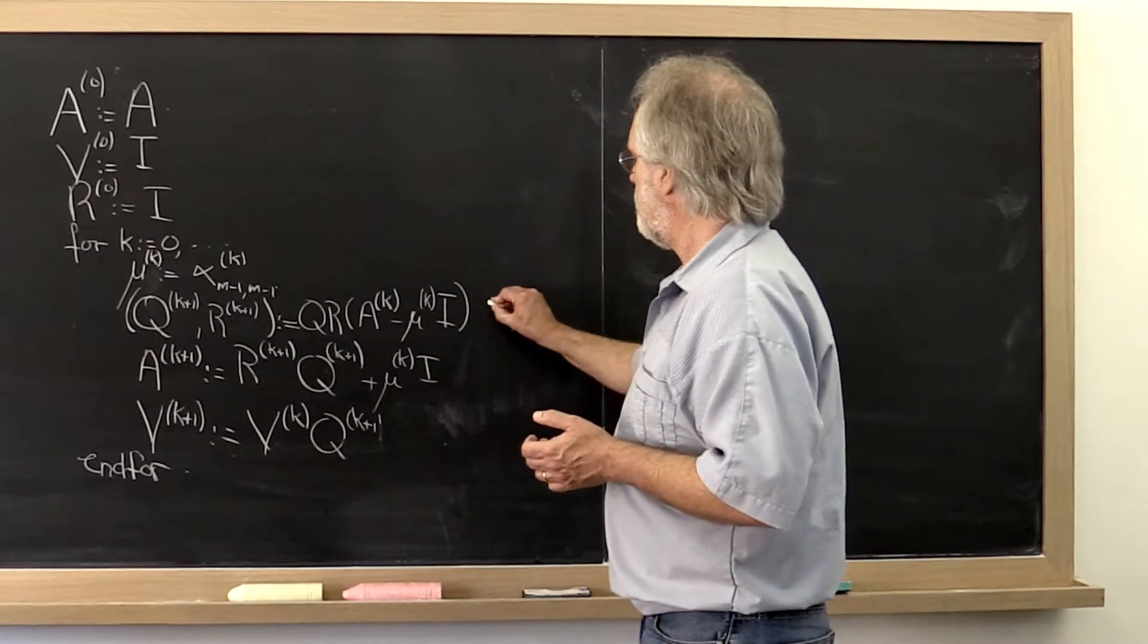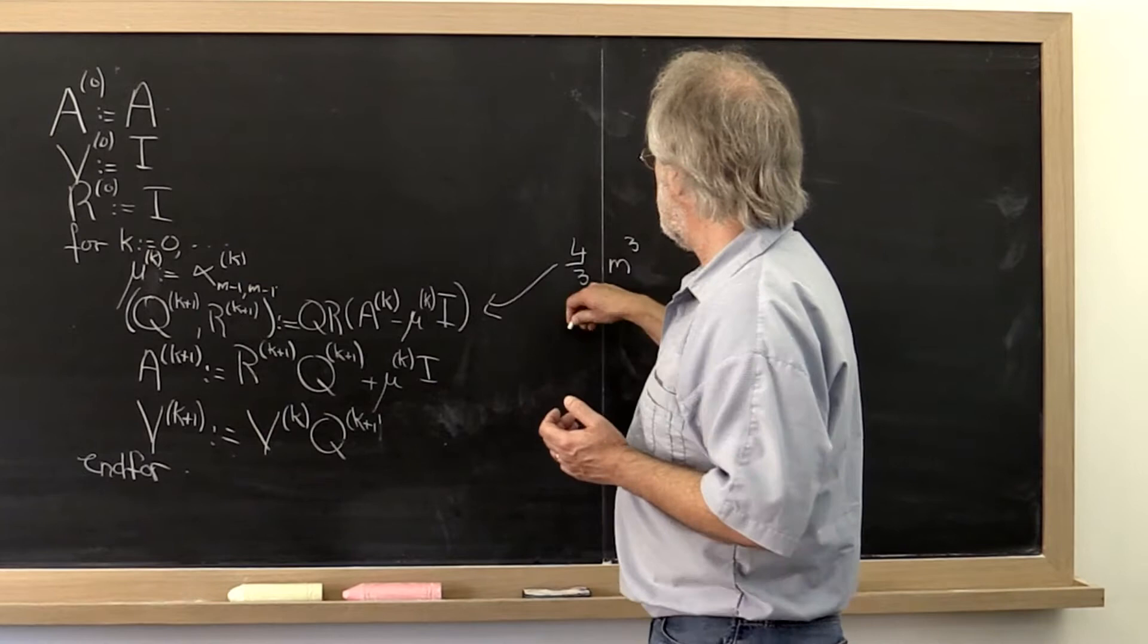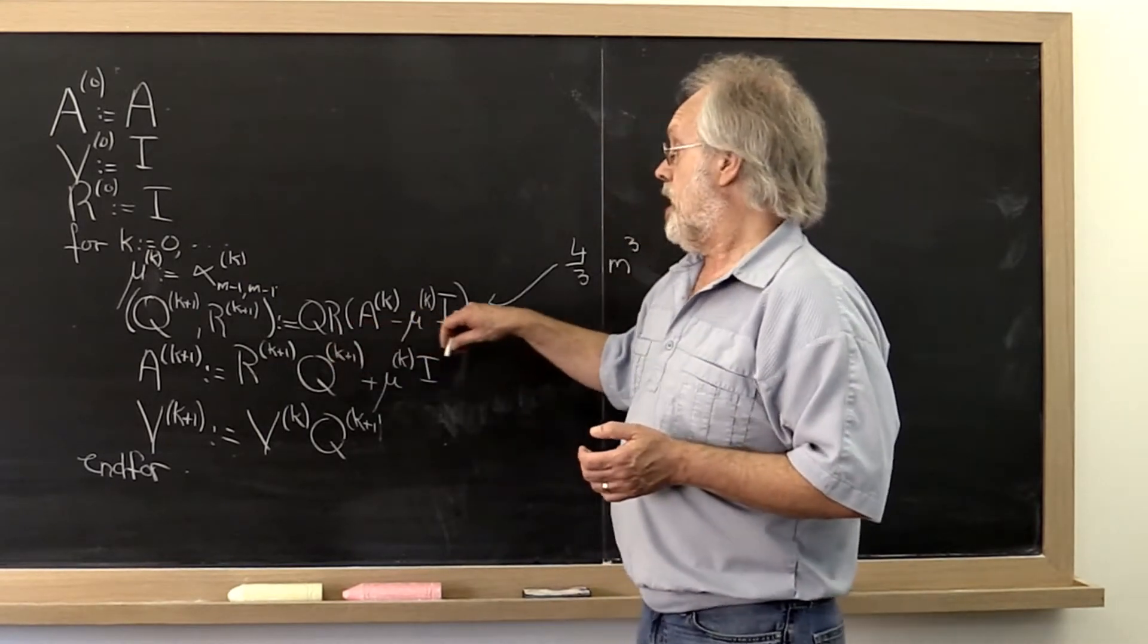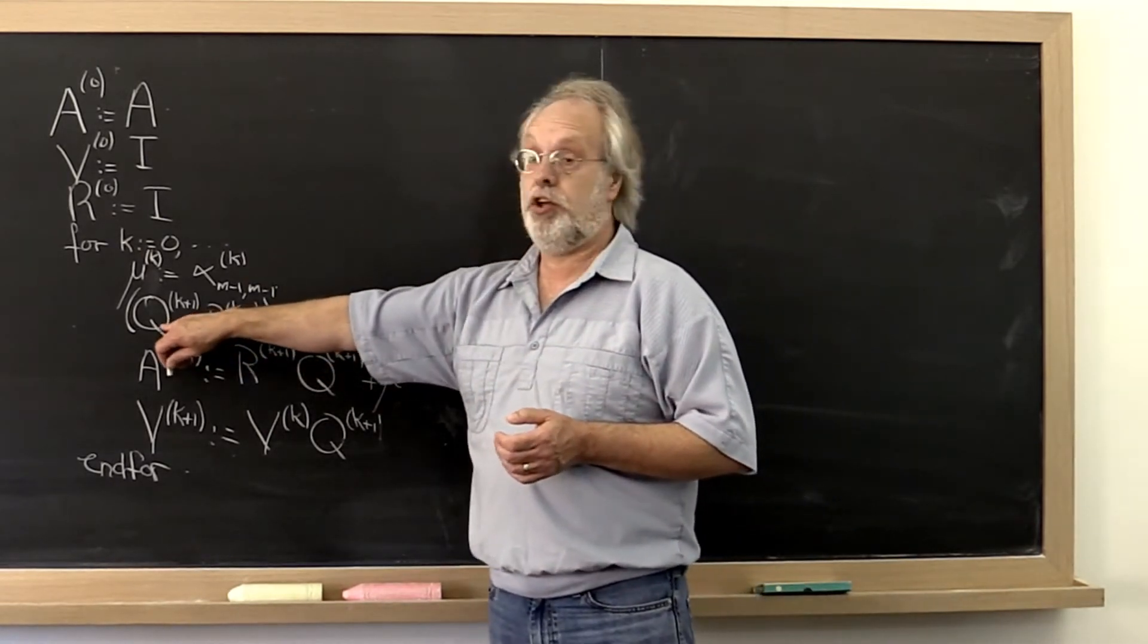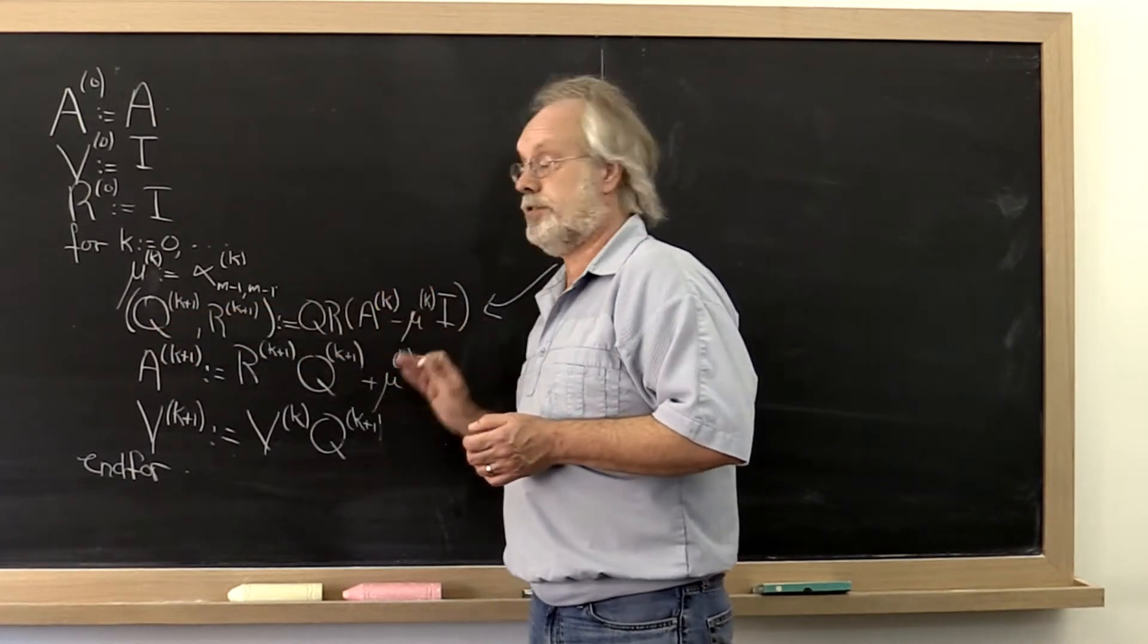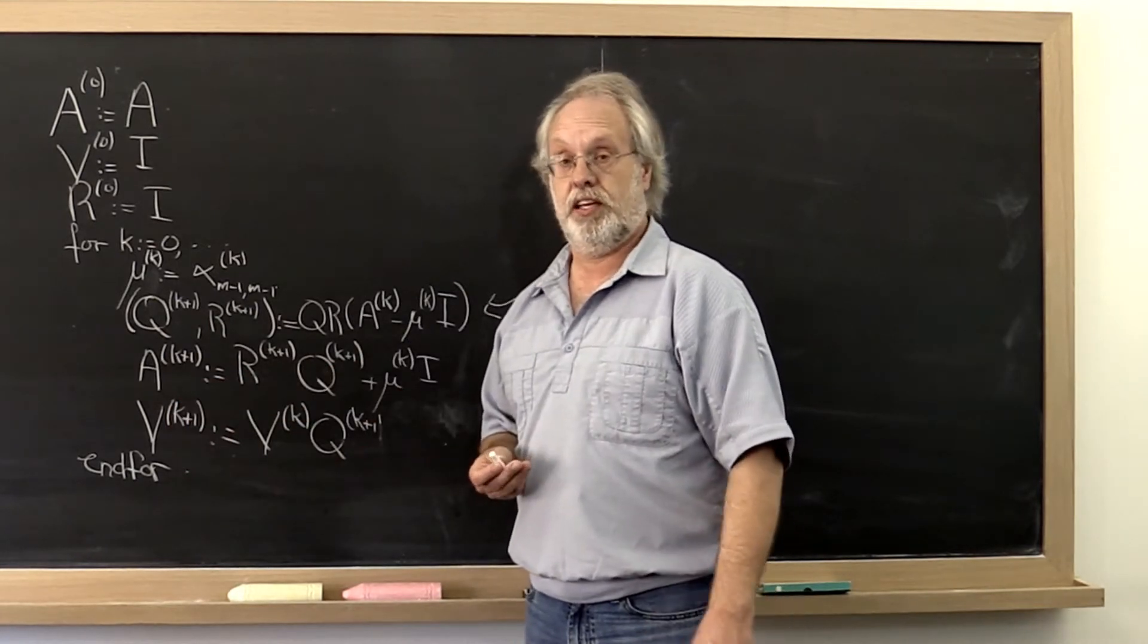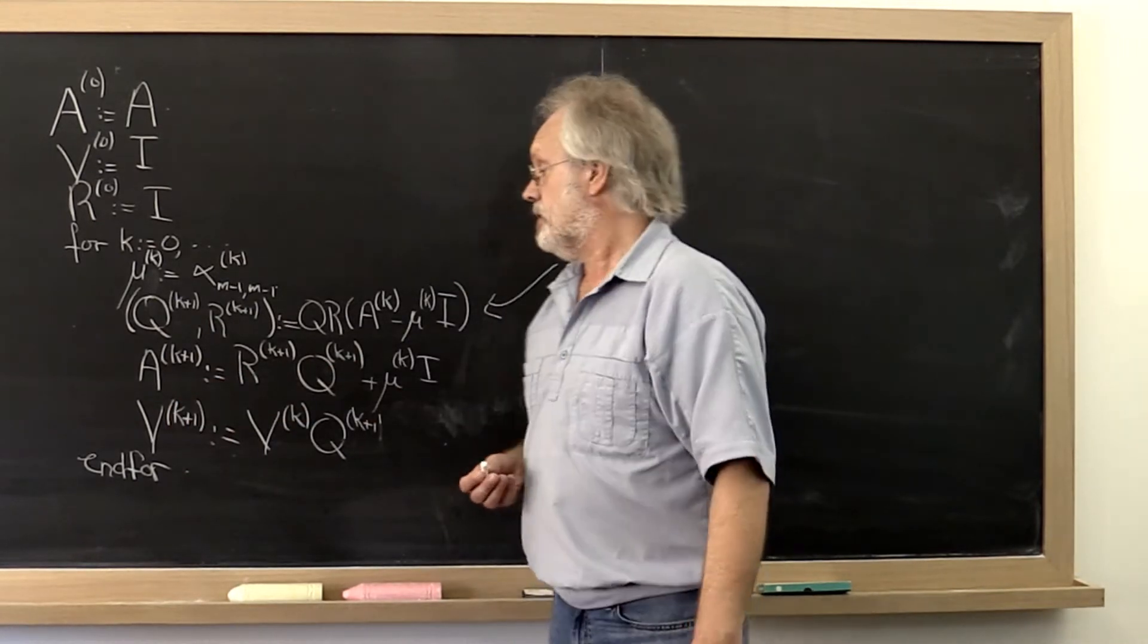So that would mean that this step would cost four thirds m cubed. But remember that we don't explicitly form Q then. We end up with the Householder vectors with which we can recreate what the action of Q is.